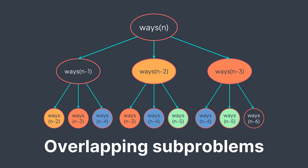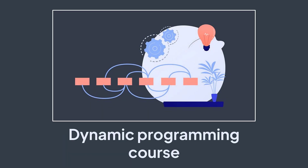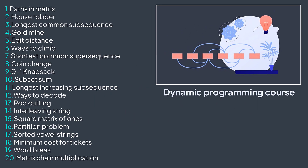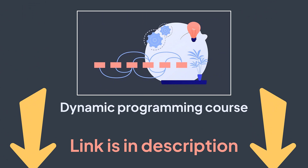The last thing we will talk about in this introduction is the two approaches of dynamic programming. Dynamic programming has two approaches: the top-down approach, called memoization, and the bottom-up approach, called tabulation. There is a lecture on each one in the dynamic programming course — a course entirely dedicated to dynamic programming where you will learn how to use both approaches, how to solve almost any DP problem, plus 20 solved and explained DP problems. You can also ask questions if you don't understand something. The link is in the description.